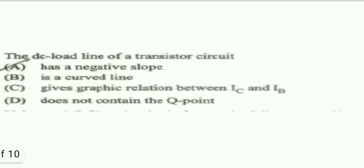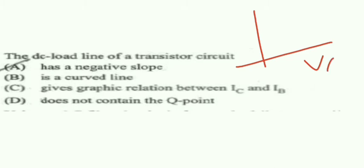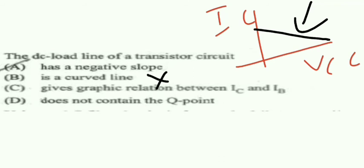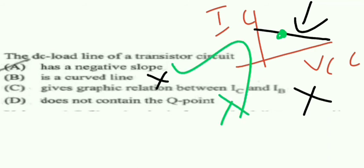Next one: the DC load line of transistor circuit. We know that DC load line we are drawing between Vcc and Ic, and it will be like this, so it is a negative slope. Is it a curve line? No. Is it a graph between Ic and Ib? No, it is a graph between Vcc and Ic. Does it not contain Q point? No, in DC load line only we are drawing a Q point. So this is also wrong. Option A is the right answer.